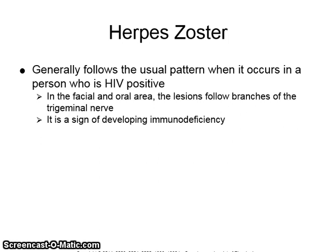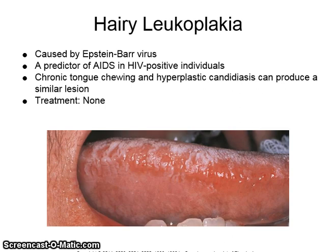Herpes zoster generally follows the usual pattern when it occurs in a person who is HIV positive. In the facial and oral area, the lesions follow branches of the trigeminal nerve, and it is a sign of developing immunodeficiency. Hairy leukoplakia is caused by the Epstein-Barr virus and is a predictor of AIDS in HIV positive individuals. Chronic tongue chewing and hyperplastic candidiasis can produce a similar lesion, and there is no treatment indicated.